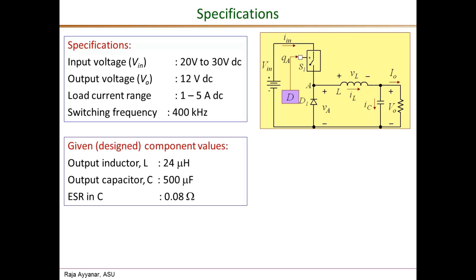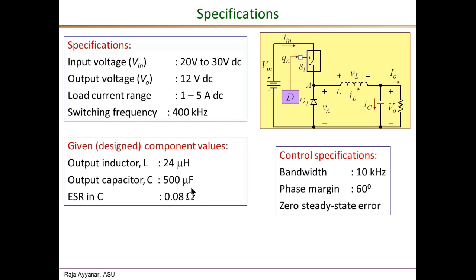I'll consider 3 amperes as a nominal current for controller design, but also verify that the system is stable under other load conditions. The switching frequency is 400 kilohertz. The power stage has been designed and the filter component values are: output inductor L = 24 microhenry, output capacitor 500 microfarad with an ESR of 0.08 ohms or 80 milliohms. The control specifications require a bandwidth of 10 kilohertz, a phase margin of 60 degrees, and zero steady-state error.